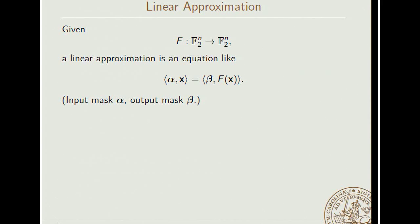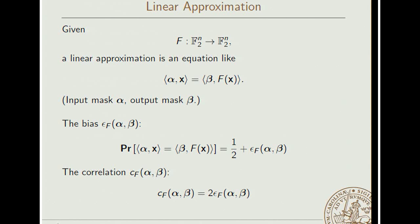And then we have this equation saying that alpha times x is equal to beta times f of x. Now, obviously, this is a half-decent block cipher. This won't happen with probability one, but some probability one-half plus an epsilon. And this is the bias of this approximation. It's useful also to talk about the correlation, which is simply twice the bias. So the general idea is that the designer of the block ciphers wants to make sure that all these biases for all these possible alphas and betas are small, while the attacker wants to find some alpha and beta where there is a large bias.